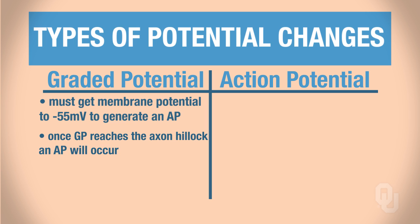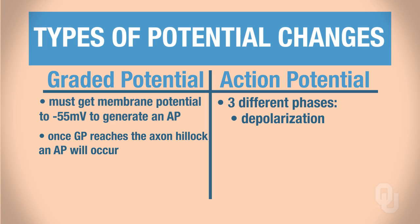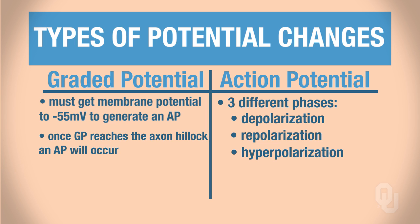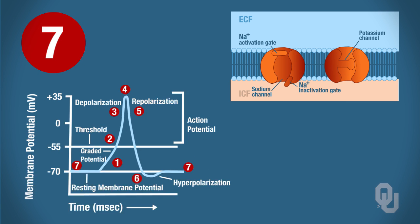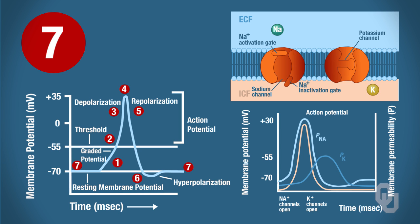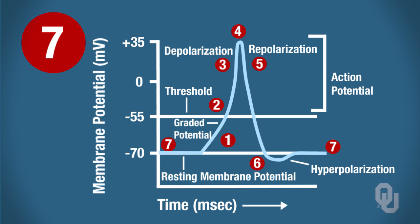Action potentials are all or none — they either happen or they don't. With the action potential, you have three different phases: the depolarization phase, the repolarization phase, and hyperpolarization. This is a very dynamic process, and it's important to understand that I can only explain it in terms of the channel being open or closed. We'll begin with our membrane at rest, at negative 70 millivolts. The figure on the bottom left shows the graded potential with respect to the action potential and how the two go together, with red numbers on the graph corresponding to the large number at the top of your screen.